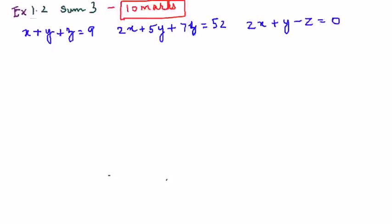Exercise 1.2, third sum is a typical 10-mark question, same as example 1.7 and also the second sum in this exercise. The only difference is it's a 3×3 matrix, otherwise the procedure is exactly the same. Pay a little attention while finding the adjoint, the inverse, and putting the signs — that's all. You'll easily be able to find the answer and grab those 10 marks. Let's get started.